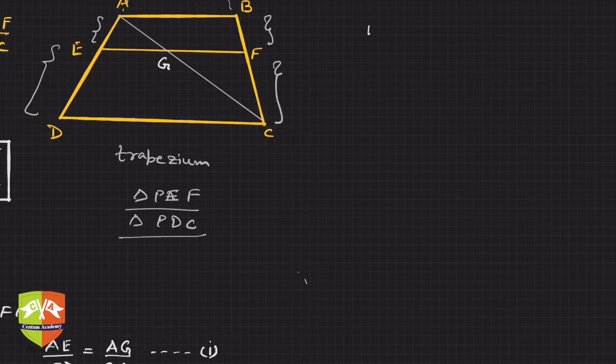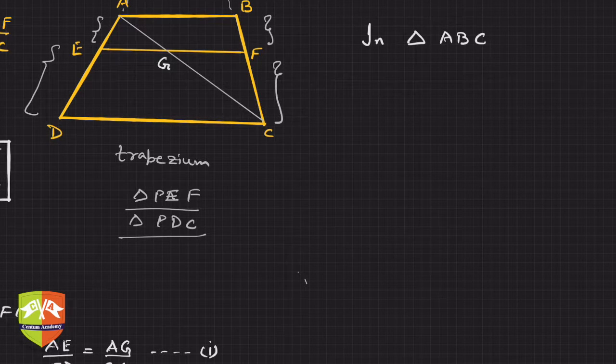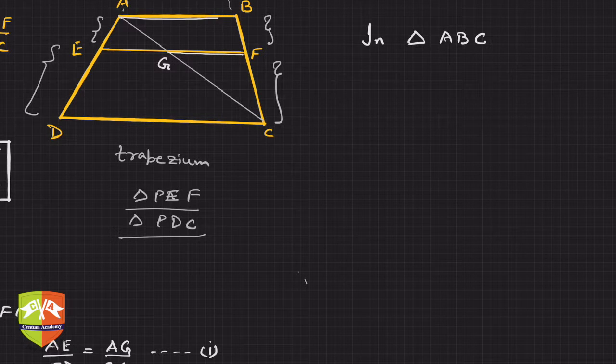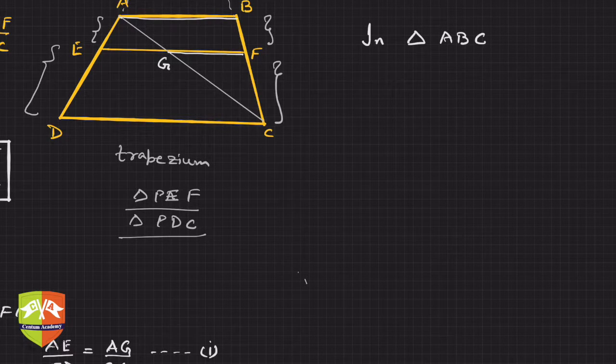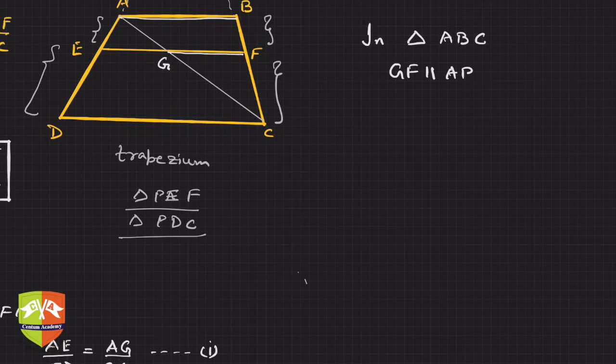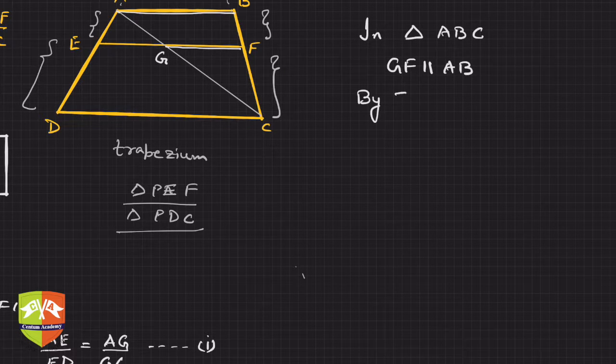Now let us write it here. In triangle ABC, if you see this EG again is parallel to the third side AB.